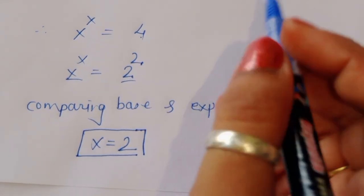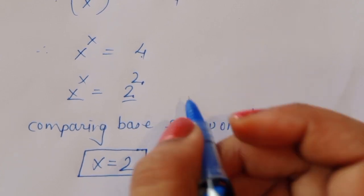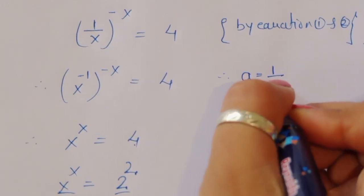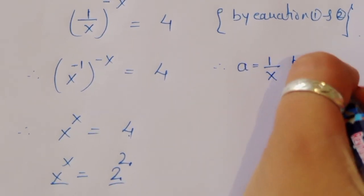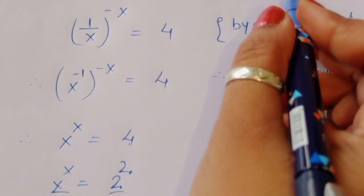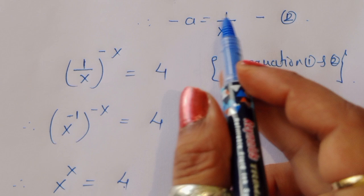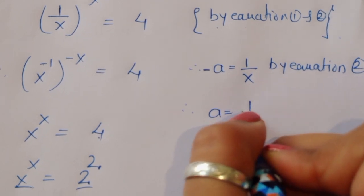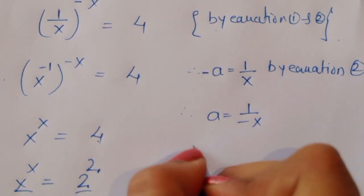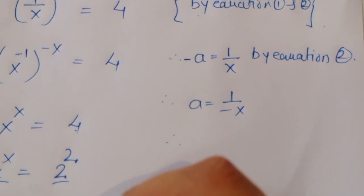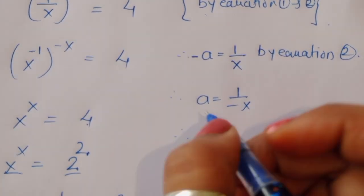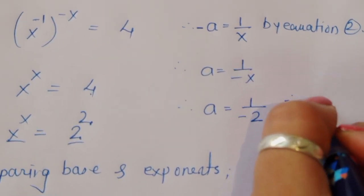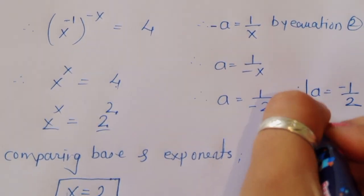Since x equals 2, and from equation 1 we have minus a equals 1 upon x, therefore a equals minus 1 upon x. Substituting x equals 2, we get a equals minus 1 upon 2. This is the value of a from the second method.